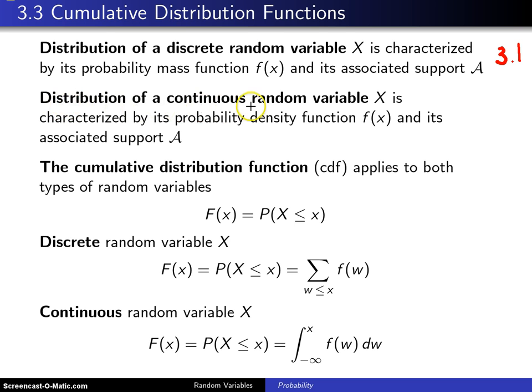The distribution of a continuous random variable X is characterized by its probability density function f(x) and its associated support, script A. And that was the essence of section 3.2.